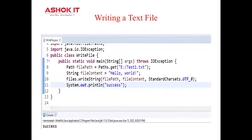You can also write to a file using the new writeString method. This method accepts three parameters: path, character sequence, and open option. It is used to write a string to a file using the specified character set and options. The advantages of readString over BufferedReader include: simplicity — the code is simpler because we don't need to deal with BufferedReader and loops; efficiency — it reads the entire file at once without the overhead of repeatedly calling readLine and concatenating strings; and error handling — it handles errors more consistently than the BufferedReader approach.